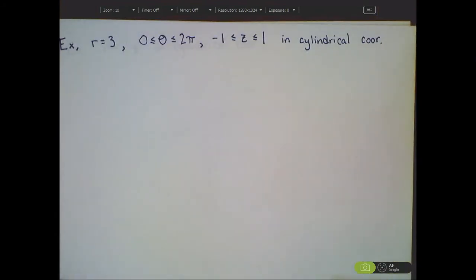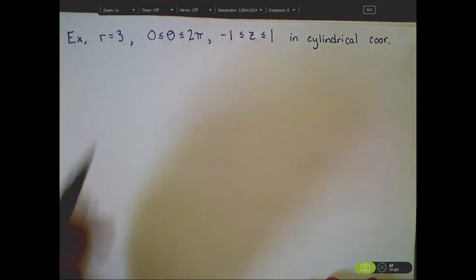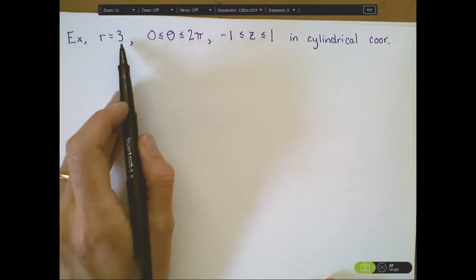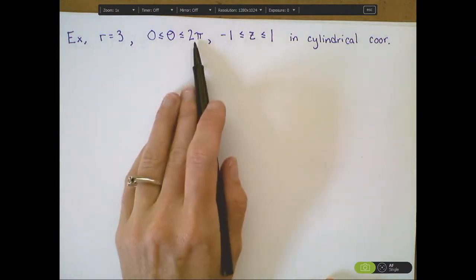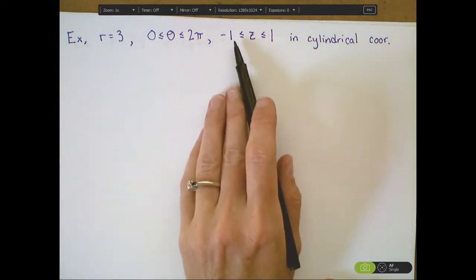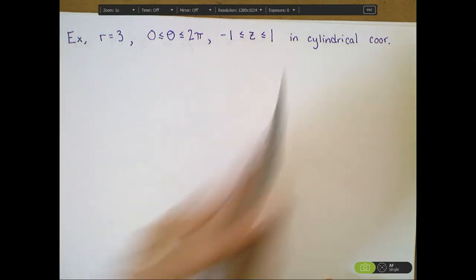So let's do an example. Why are these called cylindrical coordinates? Why might they be useful? Suppose I set my r equal to 3. My theta is allowed to vary from 0 to 2 pi. And the z-values are going from negative 1 to 1.